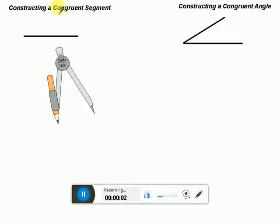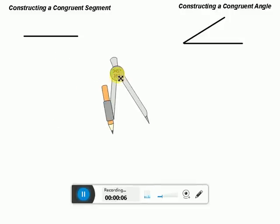Okay, so we're going to construct a congruent segment. We have our compass. First thing you need to do is, I want to make a segment that is this same exact length here.